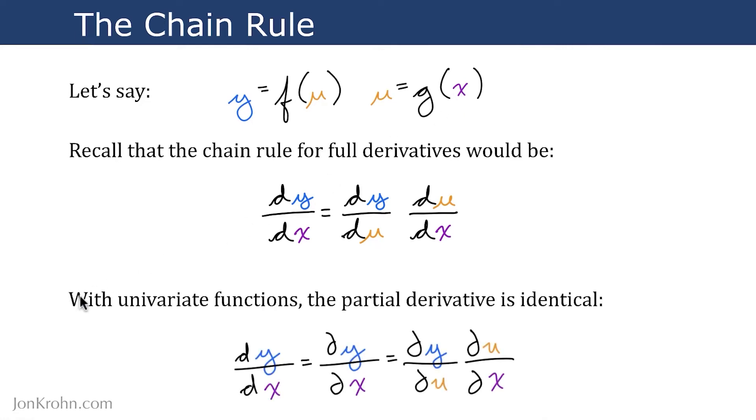With univariate functions like this, the partial derivative would actually be identical to the full derivative. In this case, dy/dx, the full derivative, would equal the partial derivative ∂y/∂x because there are no other inputs involved—it's a univariate function nested inside a univariate function. If you were to compute partial derivatives, ∂u/∂x would be exactly the same as du/dx, and ∂y/∂u would be exactly the same as dy/du, so you'd get the same result either way. It would be unusual to use partial derivatives in this situation.